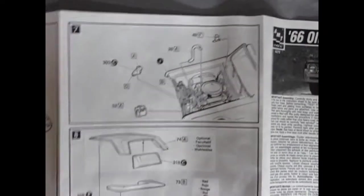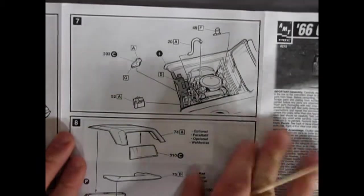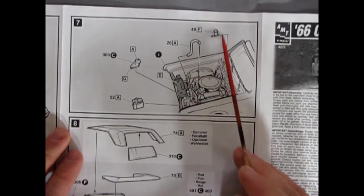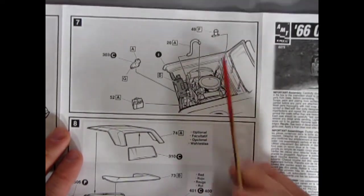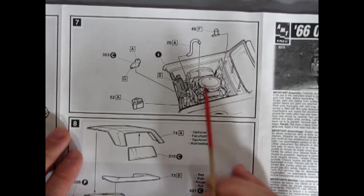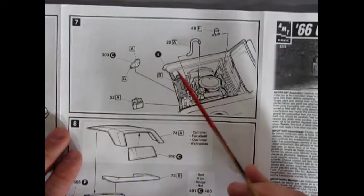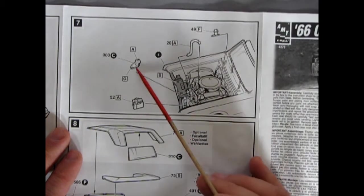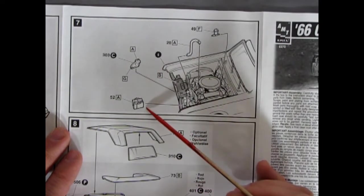Then we get into our under the hood components. So there is our brakes right there. The power brake reservoir. The upper radiator hose. And windshield washer bottle. As well as the battery.